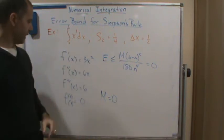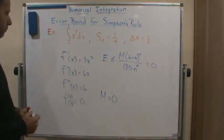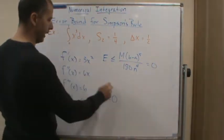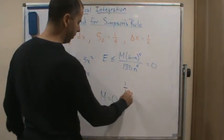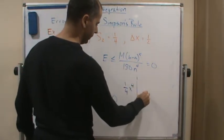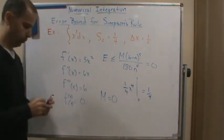And we can see that by integrating. So if we integrate this, what do we get? We get (1/4)x⁴ evaluated from 0 to 1, and that's equal to 1/4.